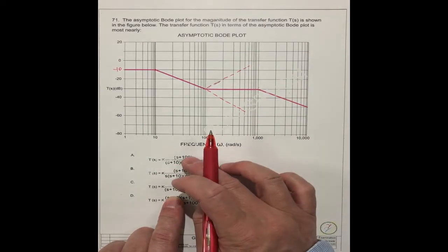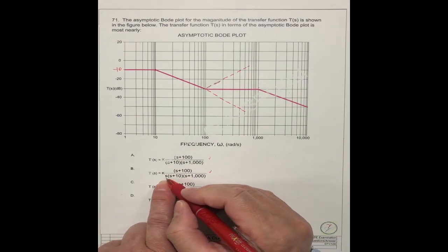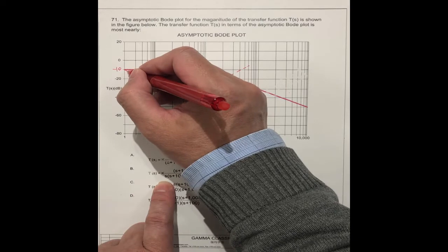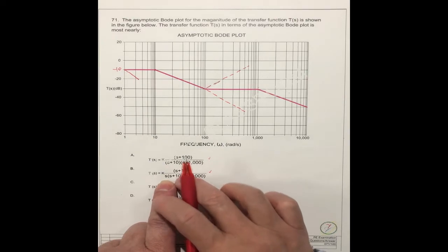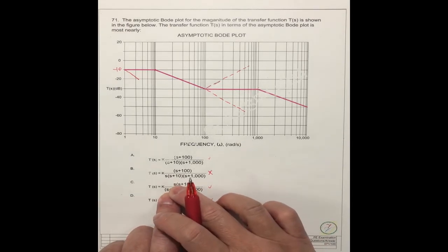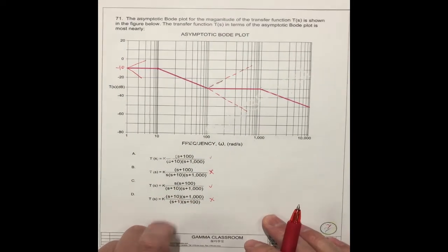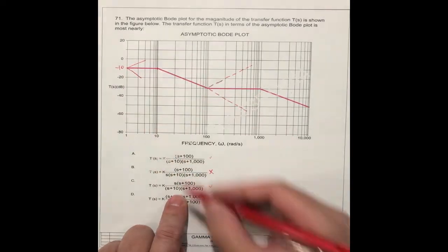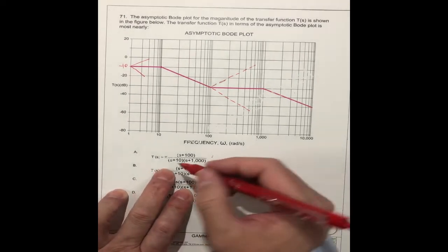But for the second one, if this second is correct, s equal to zero should be one line going down. But it didn't go down. So this means there's no s in the poles. So this is out. How about this one? If the s is in the zero, at this point it should go up. But it's only flat here. So this is out.